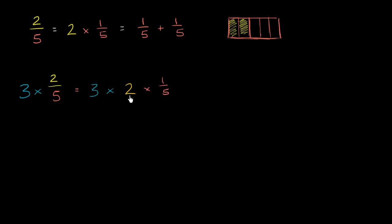And multiplication, we could multiply the 2 times the 1/5 first, and then multiply by the 3. Or we could multiply the 3 times the 2 first, and then multiply by the 1/5. So you could view this literally as being equal to 3 times 2, which is of course 6. So this is the same thing as 6 times 1/5.